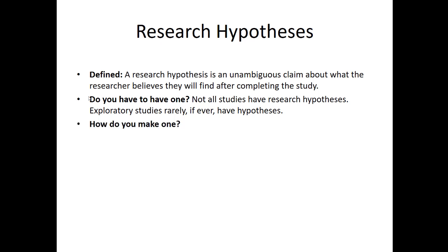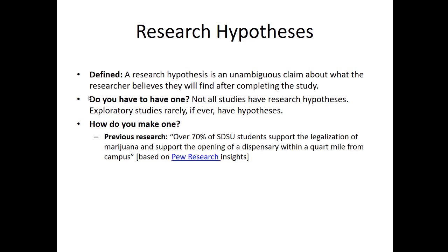Where do hypotheses come from in marketing research studies? There are three sources. One: previous research. For example, the hypothesis that over 70% of SDSU students support the legalization of marijuana and support opening a dispensary within a quarter mile from campus. This comes from a Pew Research study showing that over 70% of millennials support marijuana legalization nationally. I'm taking that previous research and making a few assumptions — that those who support legalization also support dispensaries — and making it specific to SDSU students. The previous research isn't a literal interpretation; that's why I'm doing my own study, but it is clearly based on previous evidence.